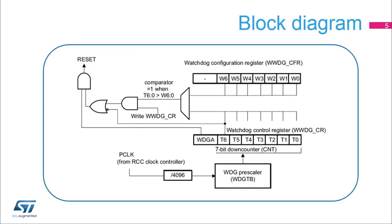The PCLK clock from the RCC clock controller is used to clock the watchdog peripheral. Bits T from the watchdog control register count down until they roll over from 0x40 to 0x3F, which then generates a reset. Bits W6-0 from the watchdog configuration register contain the window value. Bits T6-0 and W6-0 are compared in order to evaluate the time to refresh the down counter in the configurable window.